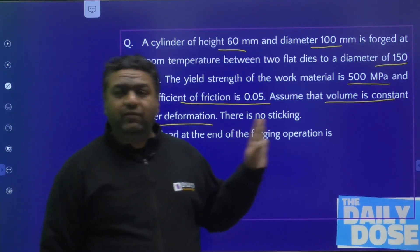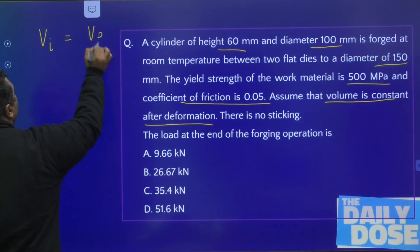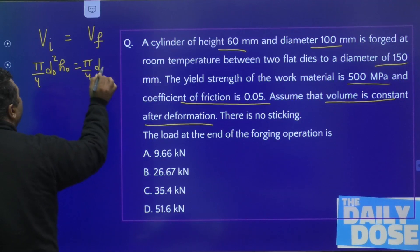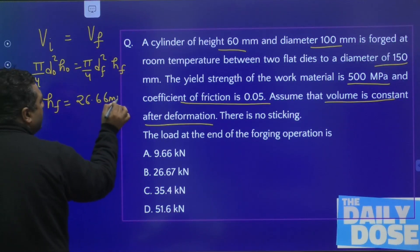Because they have not given the final height, so you can equate initial volume with final volume: π/4 d₀² h₀ = π/4 df² hf. You would get the final height to be 26.66 mm. Diameter is increasing so height will reduce.